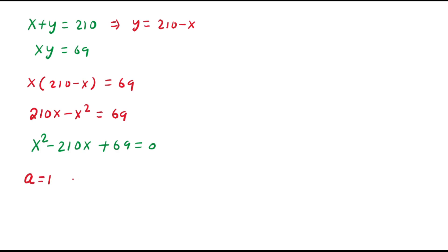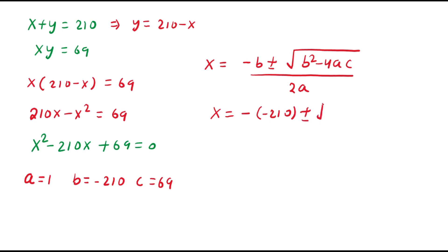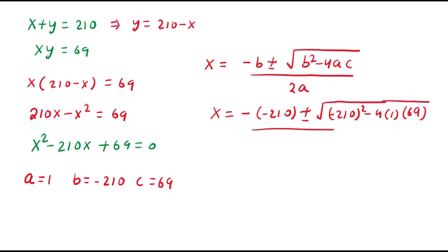Here the value of a is 1, the value of b is minus 210, and the value of c is 69. We know the quadratic formula: x equals minus b plus or minus square root of b squared minus 4ac, divided by 2a. Substituting, x equals minus (minus 210) plus or minus square root of (minus 210) squared minus 4 times 1 times 69, divided by 2 times 1. So we get plus 210.